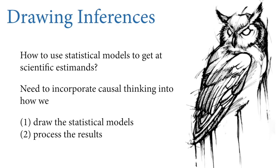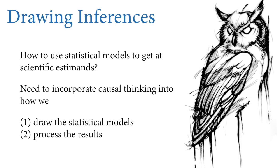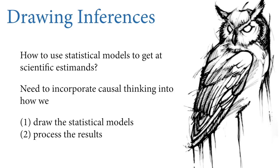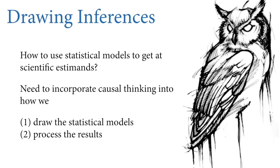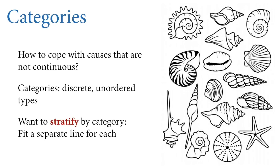This lecture is going to focus more on scientific goals. There's lots of statistical machinery we'll need, and we're going to be drawing the owl — part of drawing the owl is drawing the statistical model in a way that reflects our scientific goals. As our analyses get more complicated, we have to think about the statistical model and its relationship to our scientific estimates more carefully. We're going to incorporate causal thinking into how we draw statistical models and process results. In the example I'll use today, we're going to have to talk about categories.